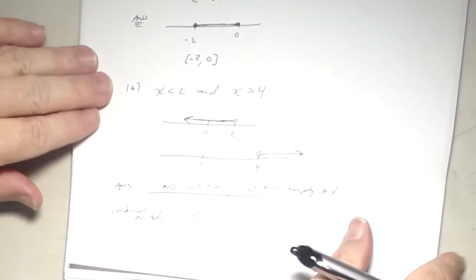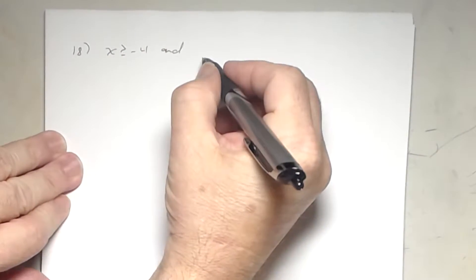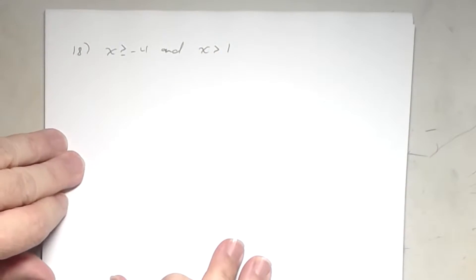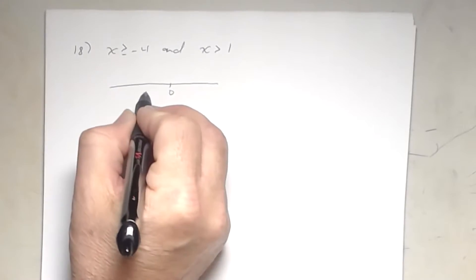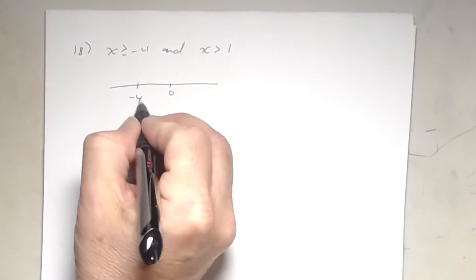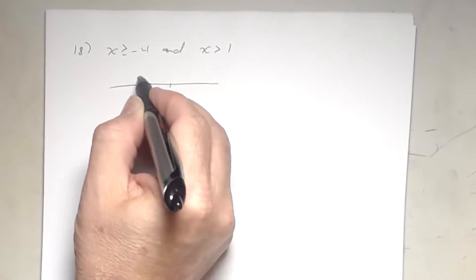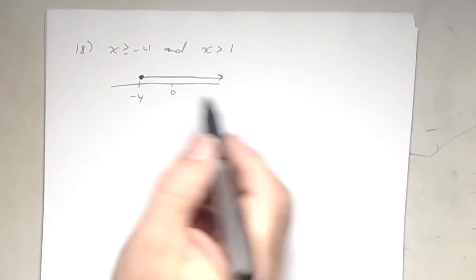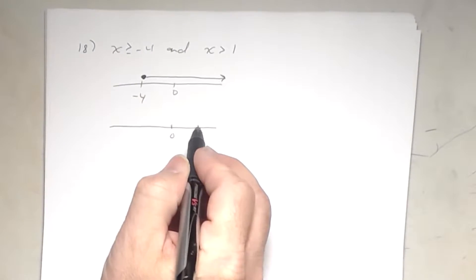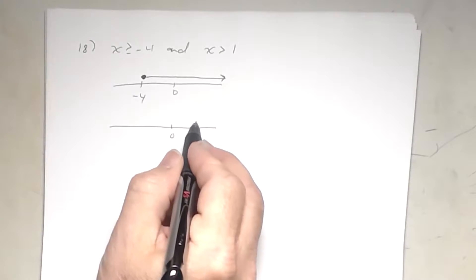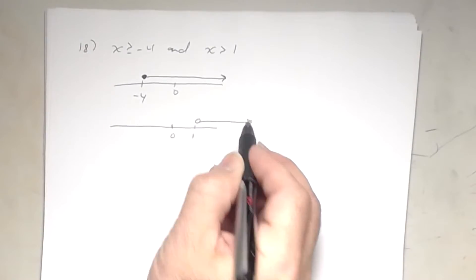Number 18: x ≥ -4 AND x > 1. Graph each one individually. For x ≥ -4, place negative four to the left of zero with a closed circle going right. For x > 1, place one to the right of zero with an open circle going right.